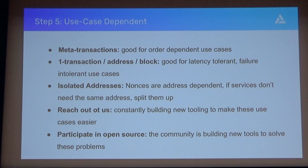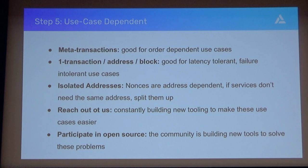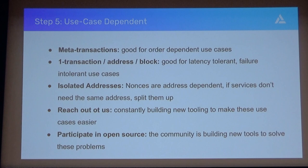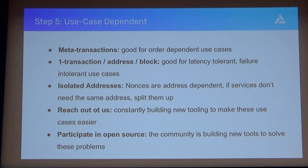Some other things to quickly run through: meta-transactions—I don't have a ton of experience with them, but I've heard good things. If ordering is really important, you can batch a bunch of operations into a single transaction and have a smart contract distribute them effectively. Using one transaction per address per block is basically the idea of submitting one transaction and waiting for it to be mined before submitting the next. That's not going to work for a lot of people because it's very slow, but if you care about minimizing failures much more than minimizing latency, it might work for your use case. There's also the idea of isolating addresses—if you have multiple services using the same address and all managing nonces, that gets very complicated. If you isolate each service to use its own address, you make life much easier and prevent things from stepping on each other.